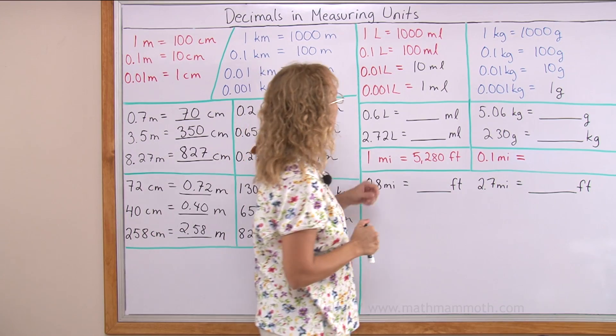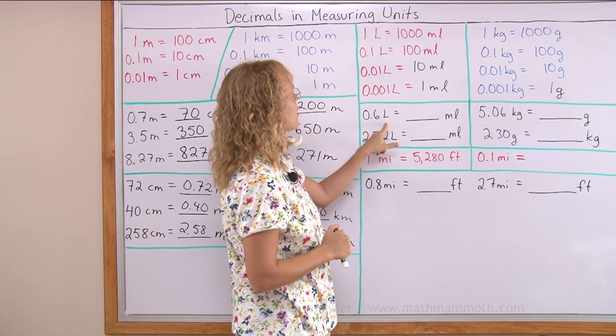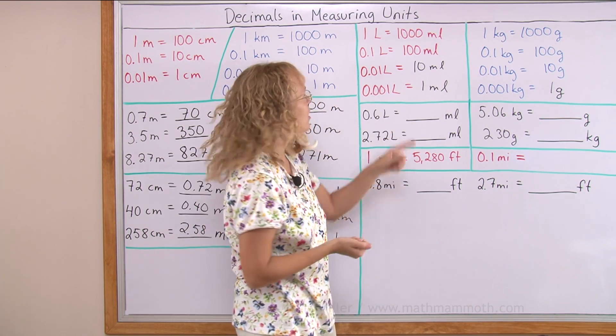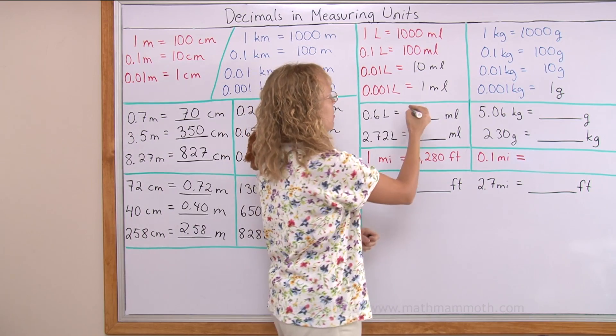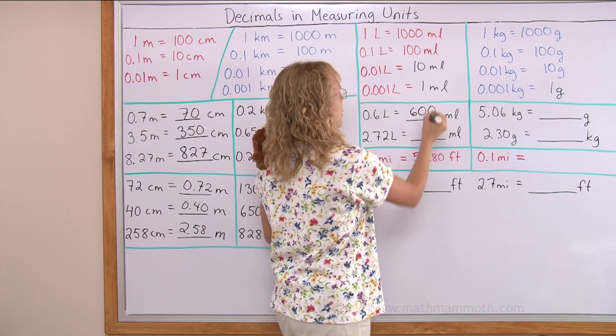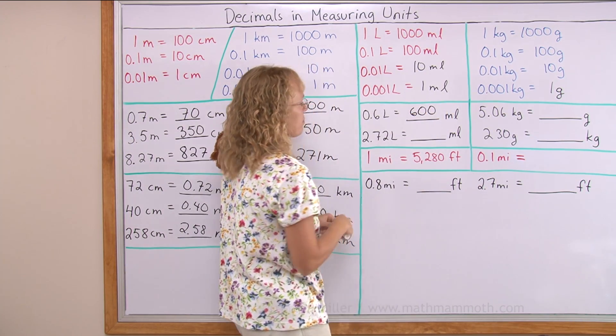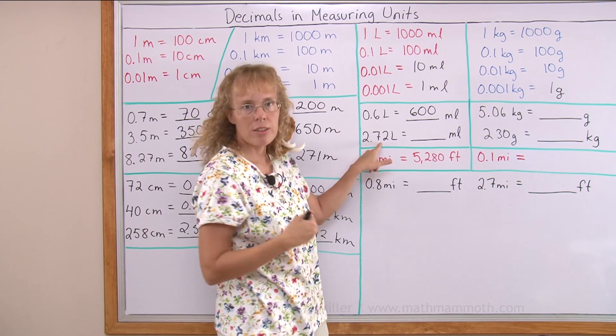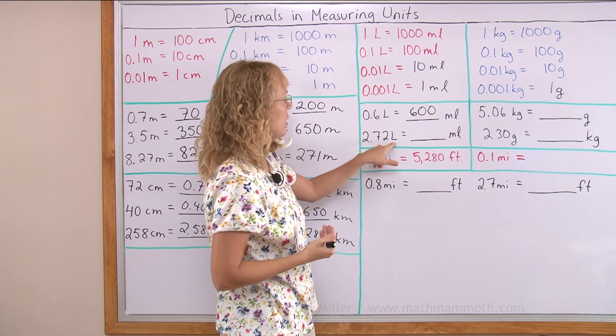We'll just look at a few of these. Six tenths of a liter. If one tenth of a liter is this much, then six tenths of a liter is 600 milliliters.